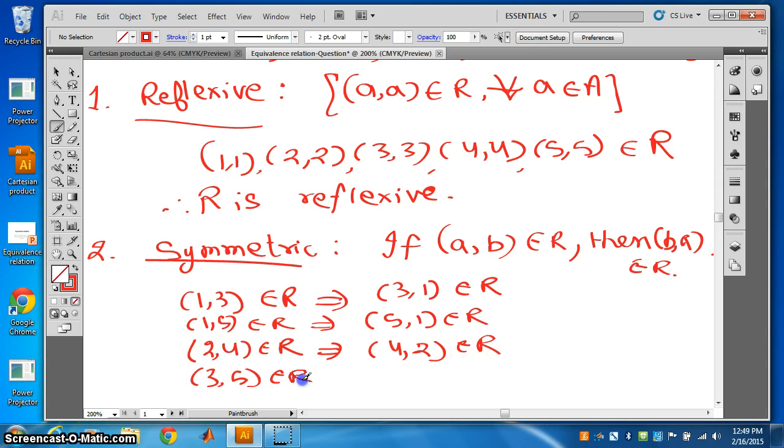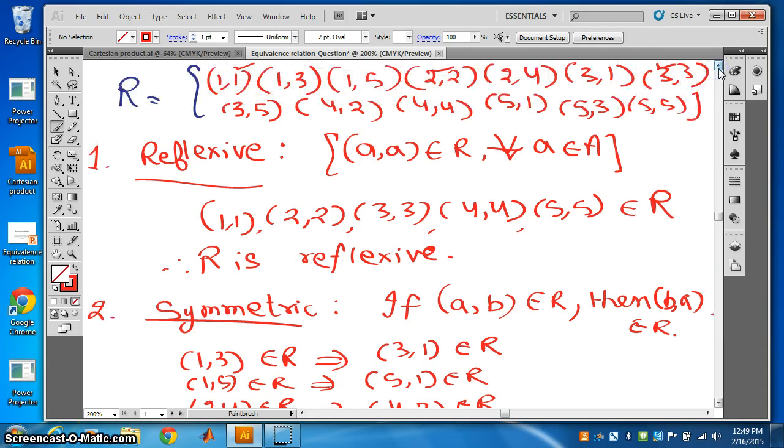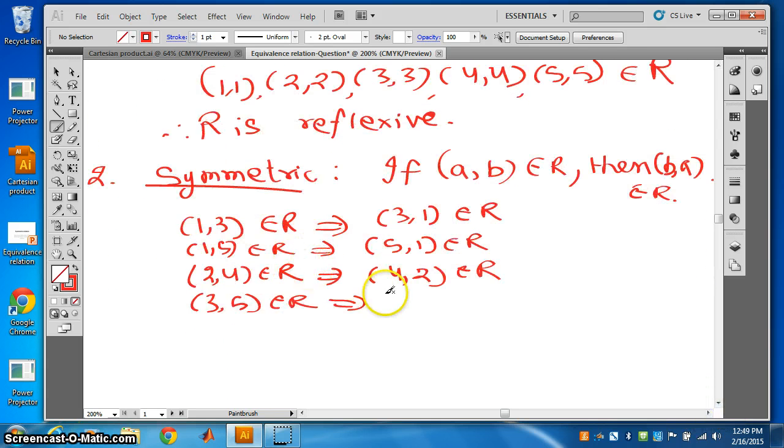(3,5) belongs to R. Let's look for (5,3). Is it there? Did you see? Let's check once again. (3,5) is here. What about (5,3)? Yes, (5,3) is also there. So (5,3) also belongs to R. Therefore we can say R is symmetric.